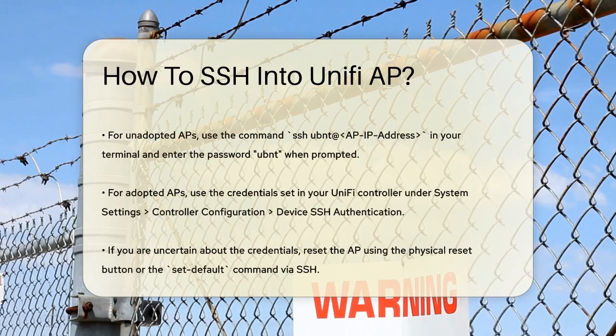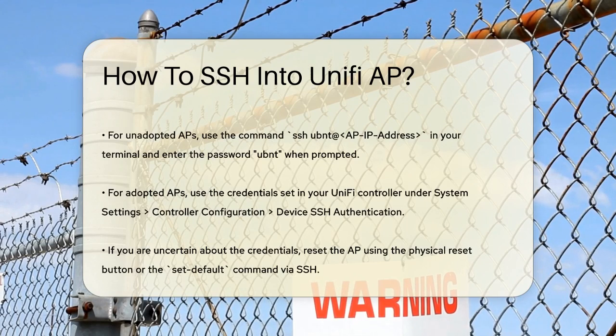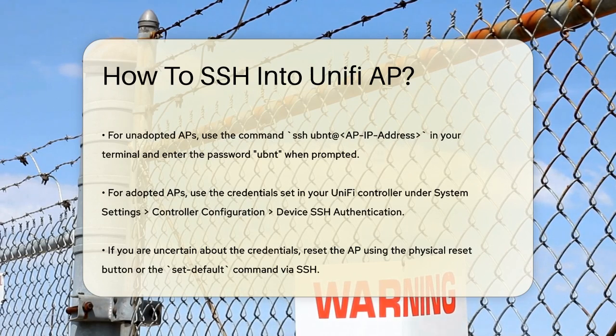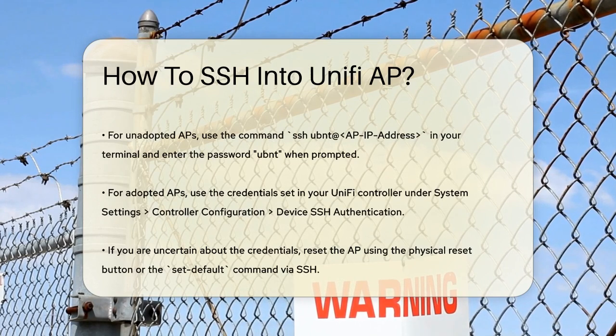If your AP is unadopted, open your terminal and run the command: ssh ubnt@<AP_IP_address>. When prompted, enter the password UBNT.